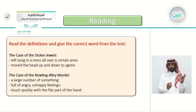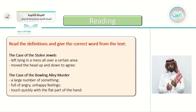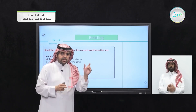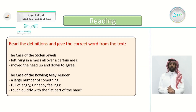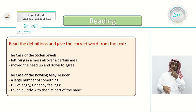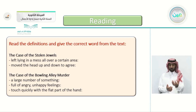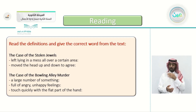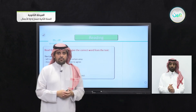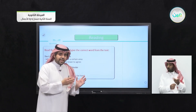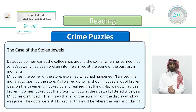Now let's look at the next activity: read the definitions and give the correct word from the text. We have five definitions — two from 'The Case of the Stolen Jewels' and three from 'The Case of the Bowling Alley Murder.' The definitions are: left lying in a mess all over a certain area; moved the head up and down to agree; a large number of something; full of angry, unhappy feelings; and touch quickly with the flat part of the hand. We will listen to the articles again, then give the answers.